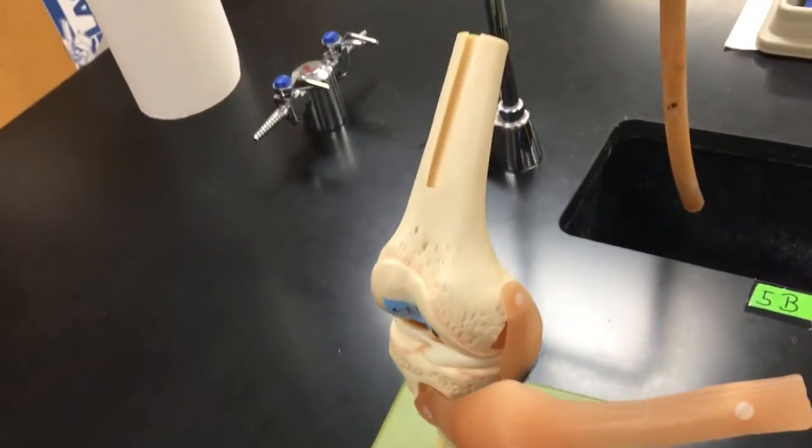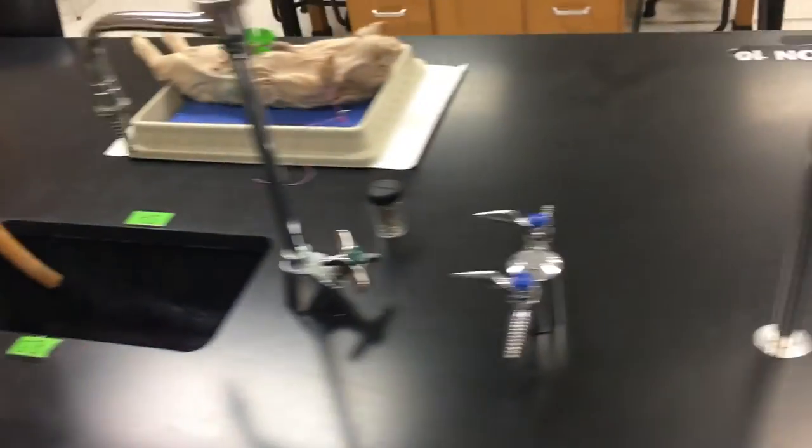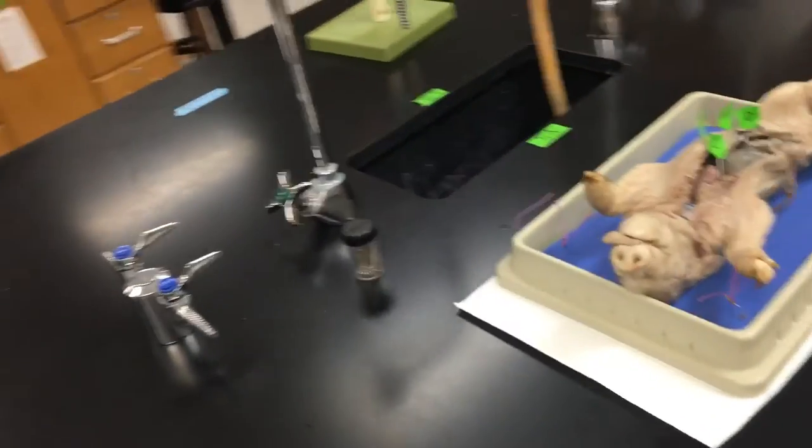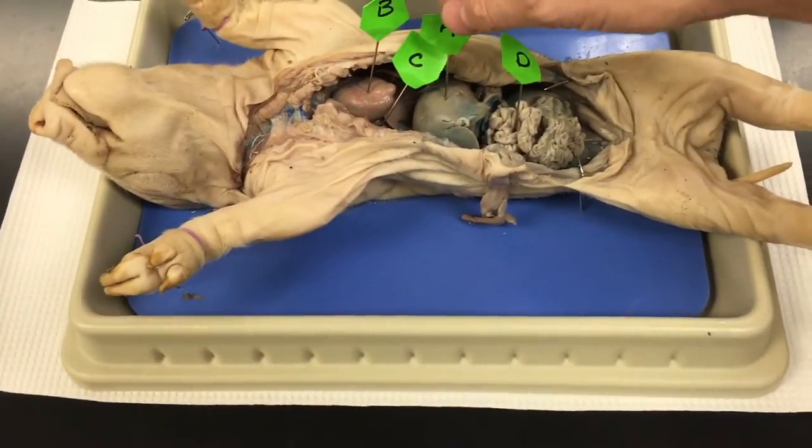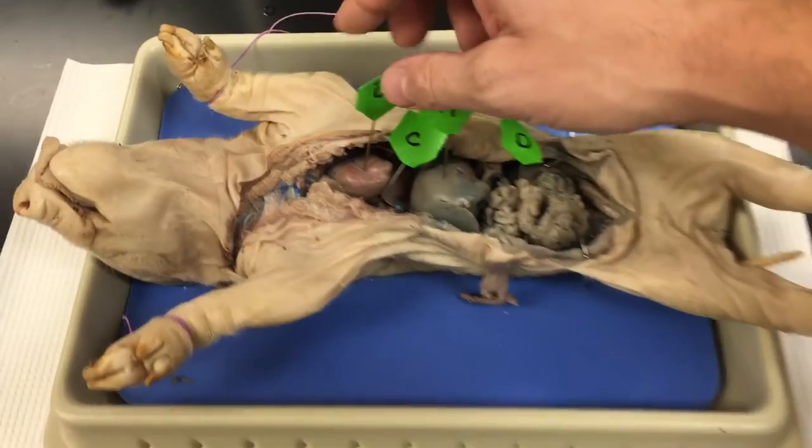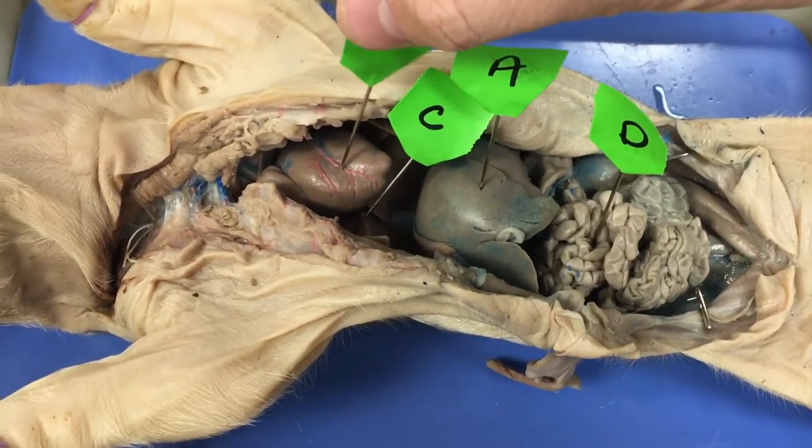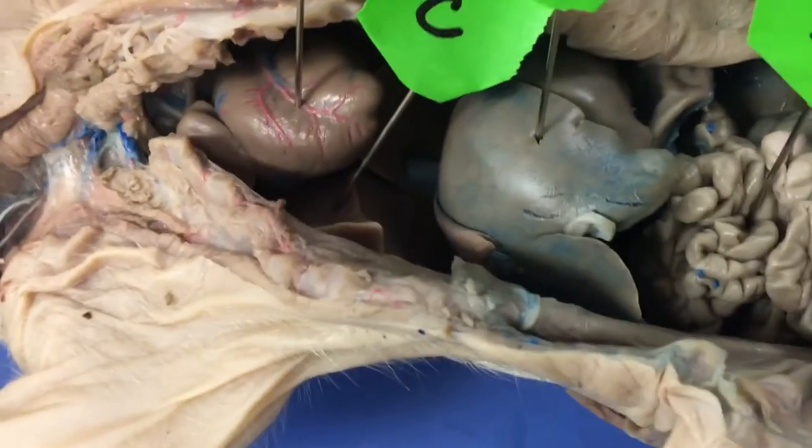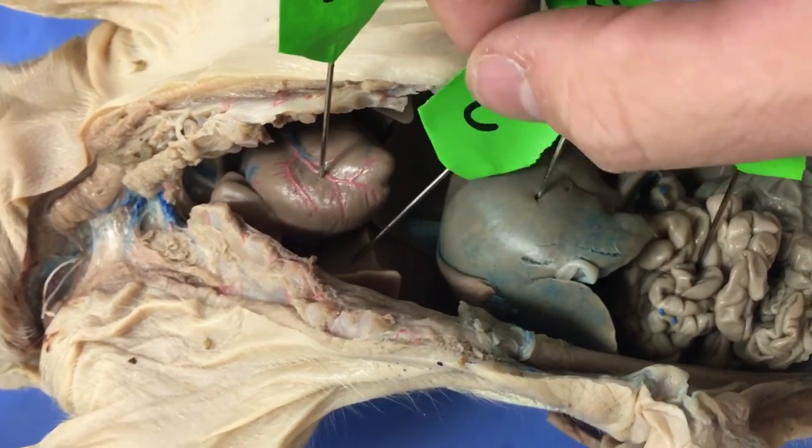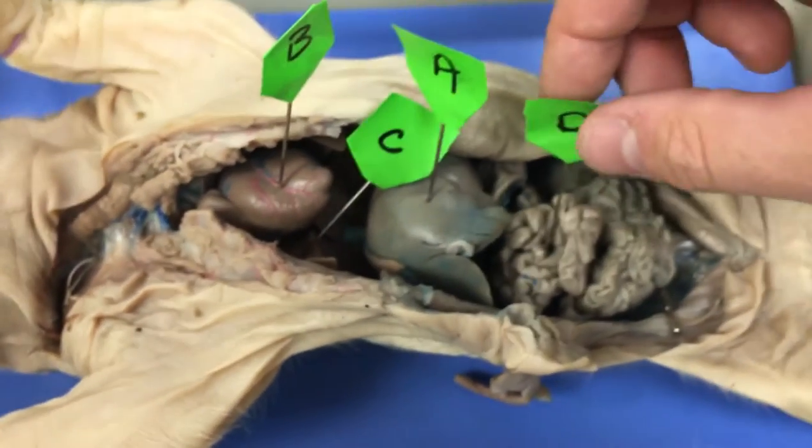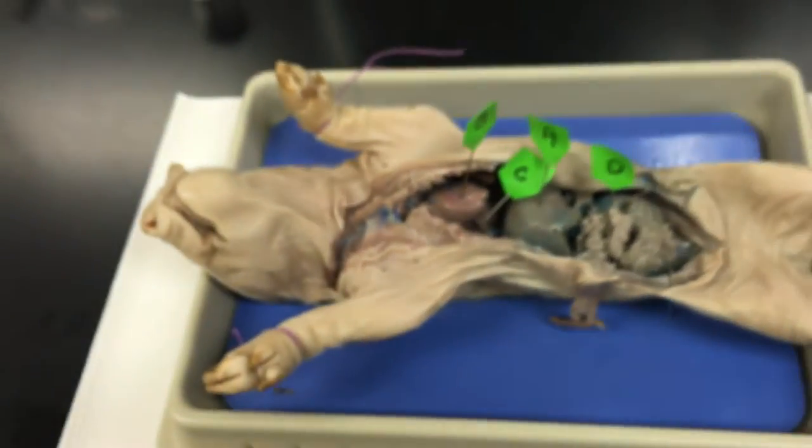Moving on to section 9, the fetal pig. A right here is the liver. B right here is the heart. Let me zoom in here. And you can see C right here is a lung. And then D right here are the intestines.